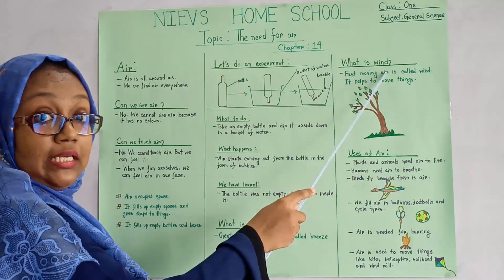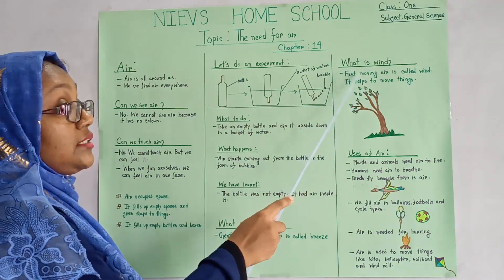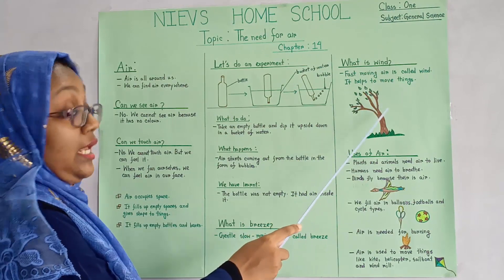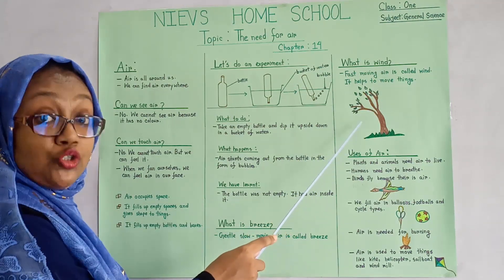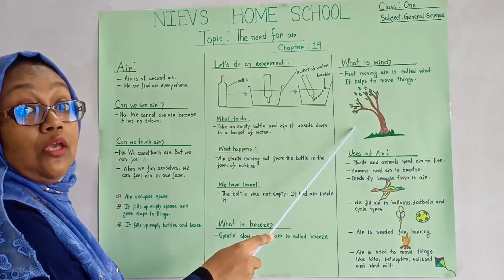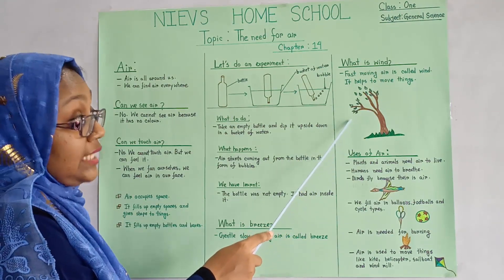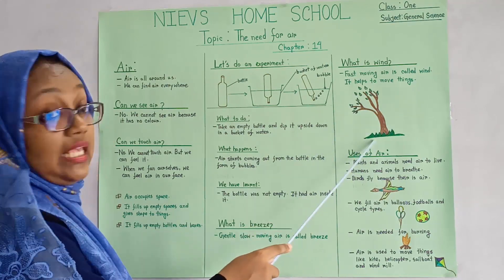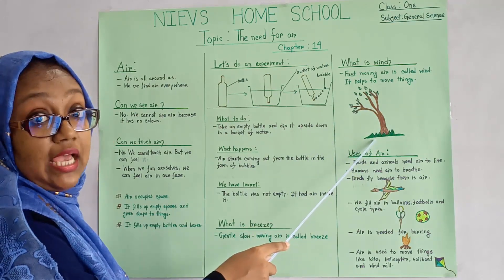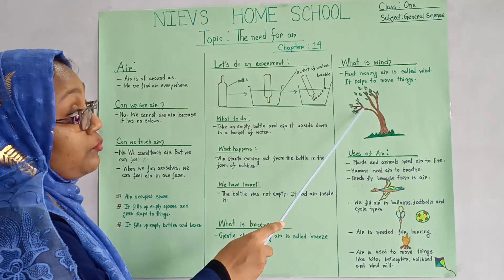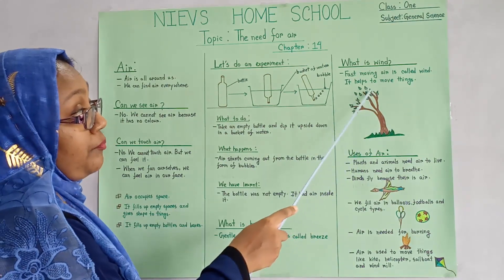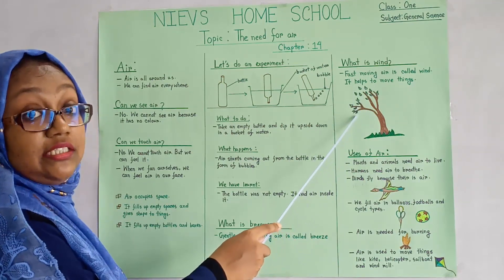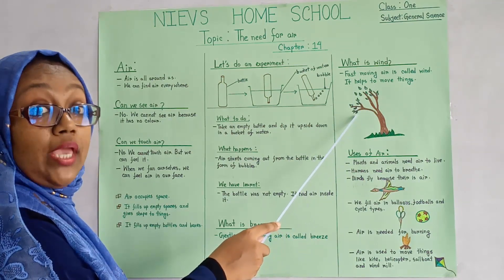What is wind? Fast moving air is wind. During a storm, you can see this kind of picture outside — the branches of trees bend like that. It's due to wind.